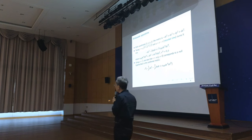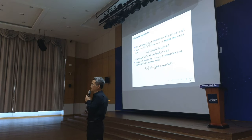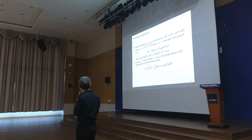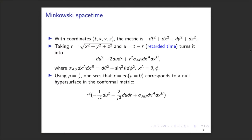Let's start from a very simple spacetime: the Minkowski spacetime of special relativity. We use a coordinate system T, X, Y, Z. The spacetime metric is just −dT² + dX² + dY² + dZ². Since we're interested in future null infinity, and how signals propagate in the direction of light, we first convert to spherical coordinates: R = √(X² + Y² + Z²).